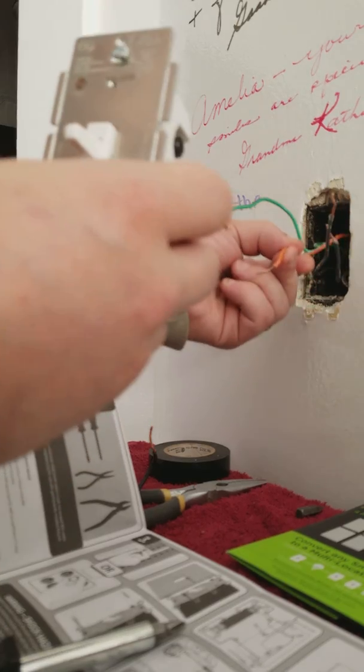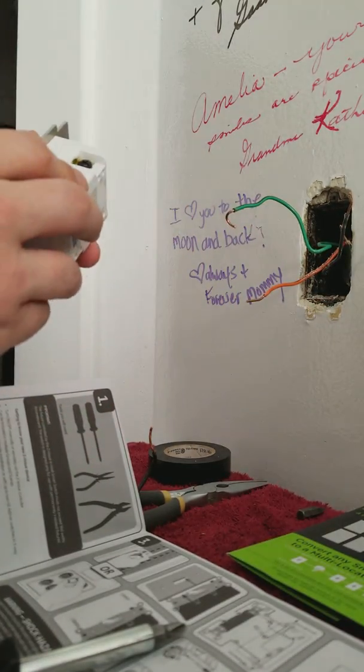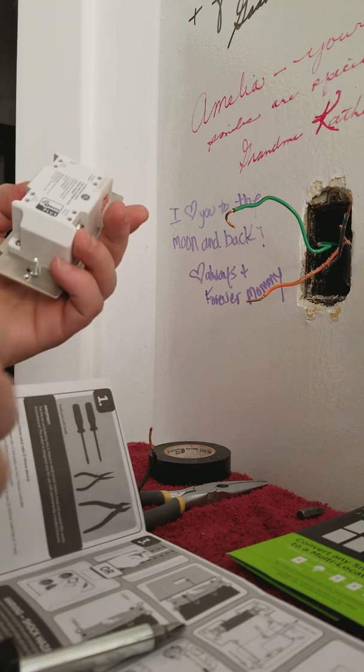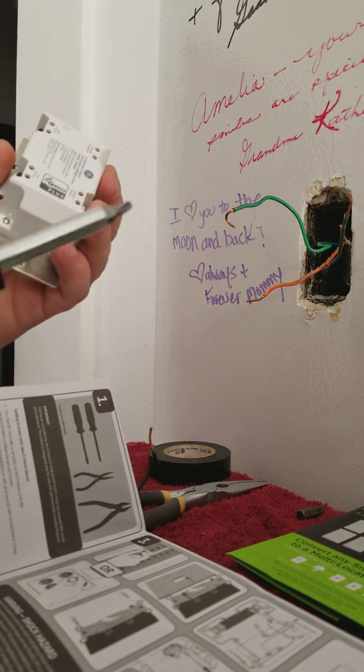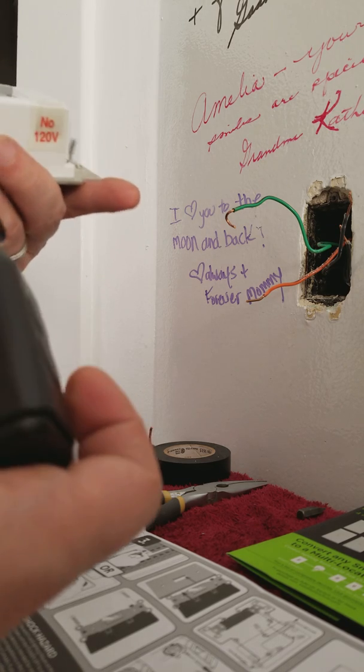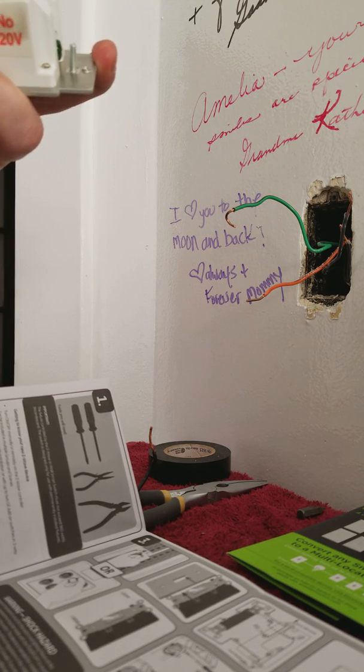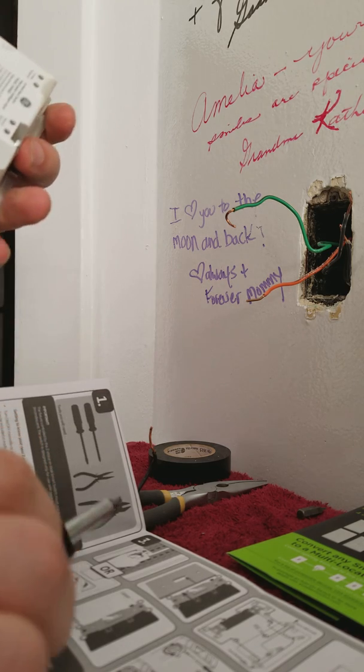So we are going to start with this neutral. Just because I have this circuit turned off at the breaker I don't have to worry about causing any sparks. Otherwise there is a specific order you go in. But we are going to go to the neutral wire here and we are just going to make sure that it is loosened up. It is currently loosened all the way.